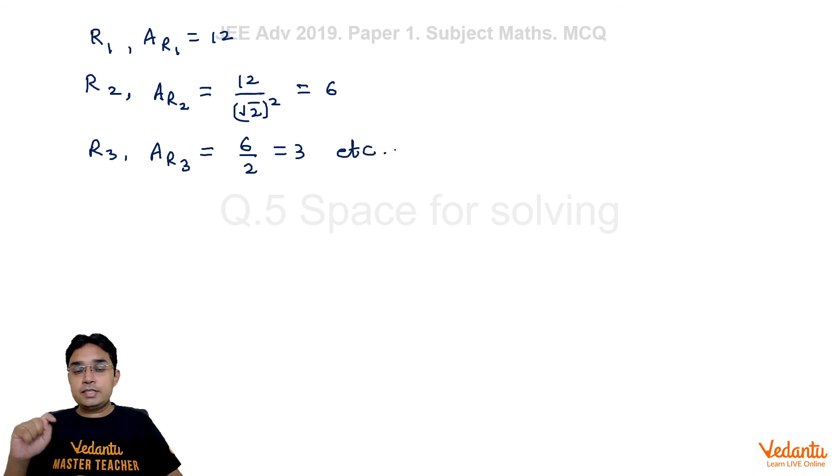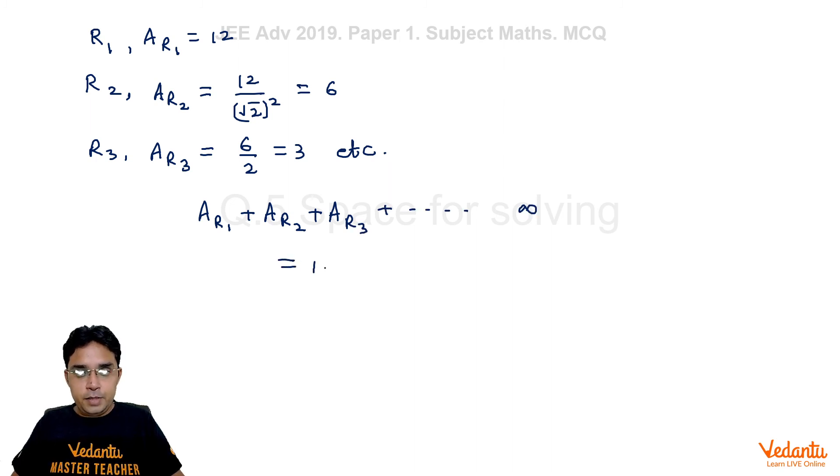Now they are asking sum of areas of rectangles as n varies from 1 to N. Let me find sum of all rectangles as my n goes to infinite. So let me find sum of all the rectangles possible: ar1, ar2, ar3 and so on up to infinite.